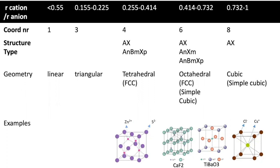CaF2 has a coordination of 6, and TiBO3 has a coordination of 6 as well. These are structures in the form of AnXm, and TaBaO3 is AnBmXp.